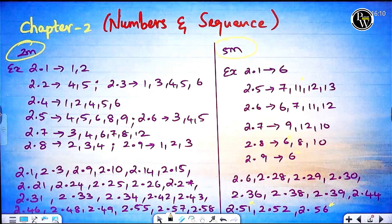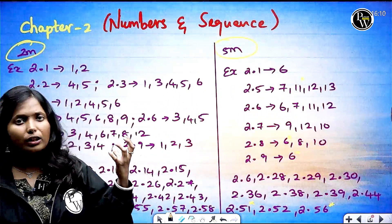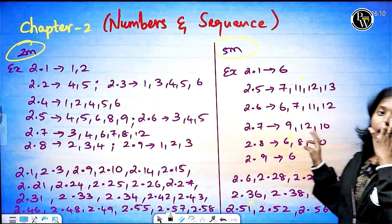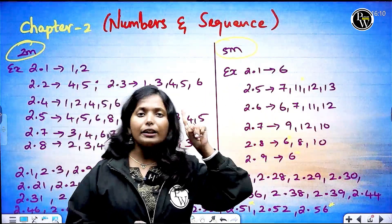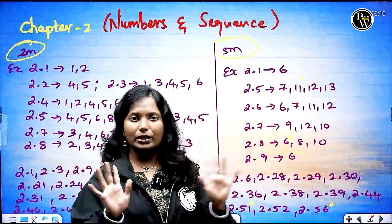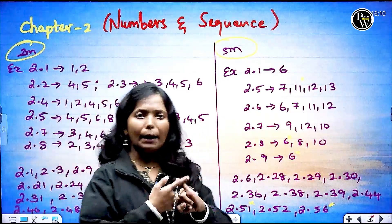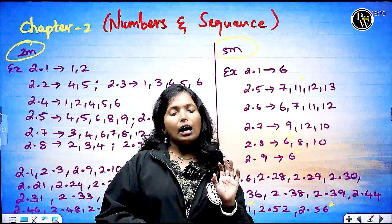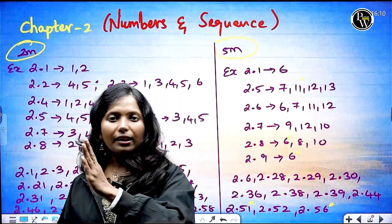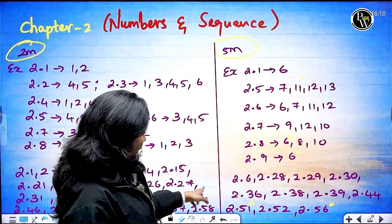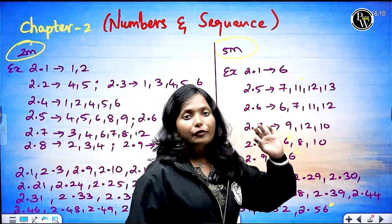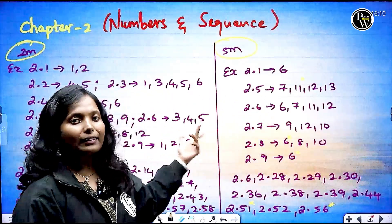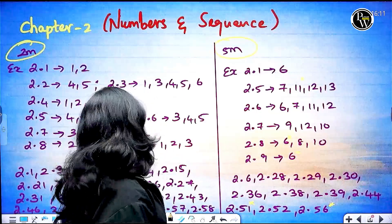Next we have Numbers and Sequences. There are 2 marks — yes, you will be able to do 2 marks — and 5 marks. The first one is Euclid's Division Algorithm, that is the Fundamental Theorem of Arithmetic. Next is the series: AP, GP — Arithmetic Progression, Geometric Progression, and Special Series. So this is the important sum. This is the compulsory path — here is the 5 marks path and the 2 marks. This chapter is over.